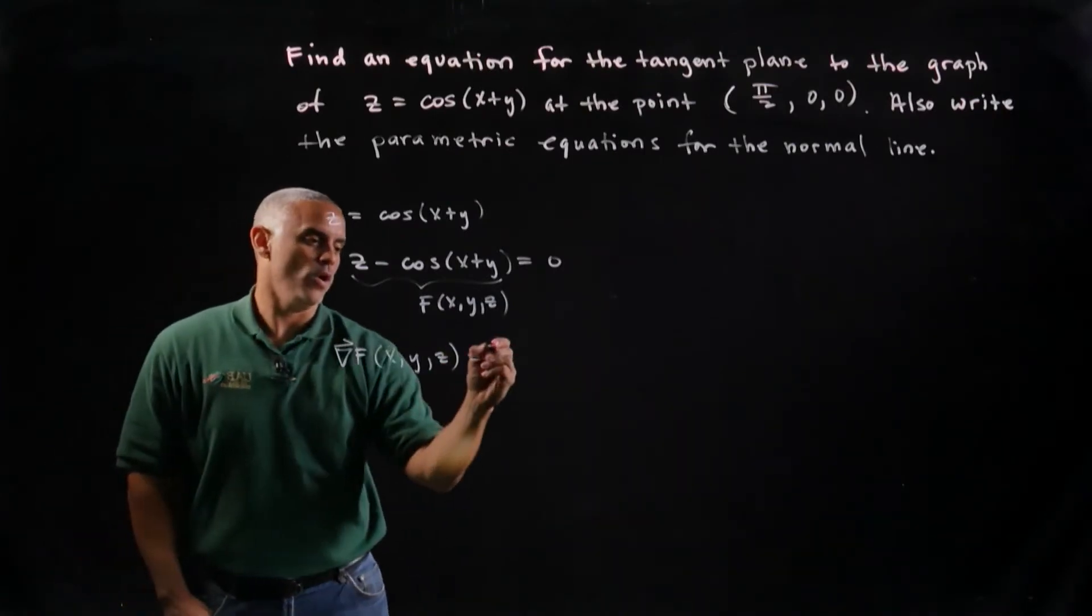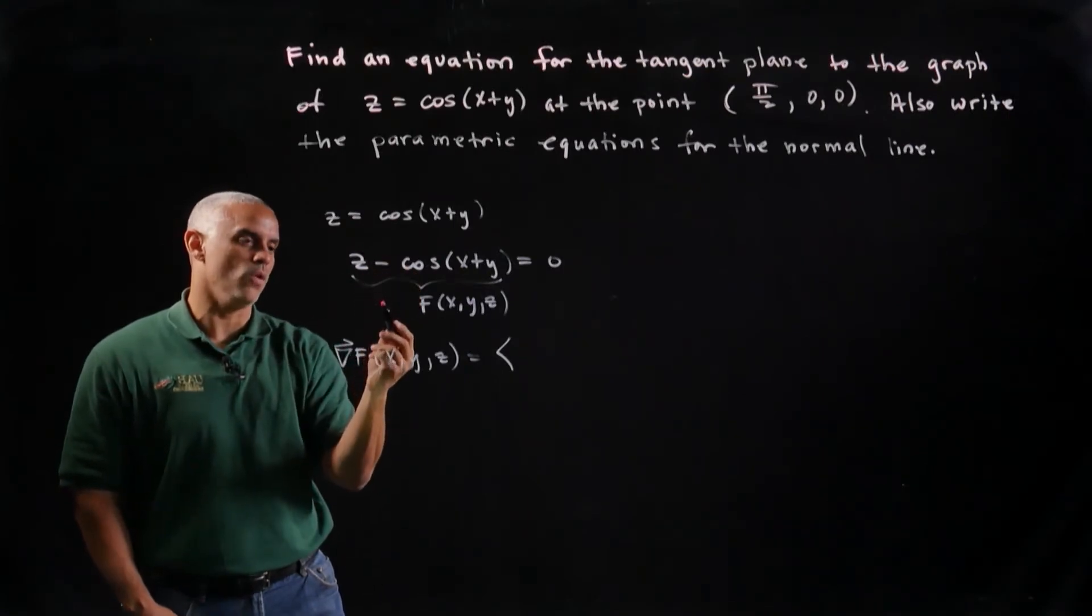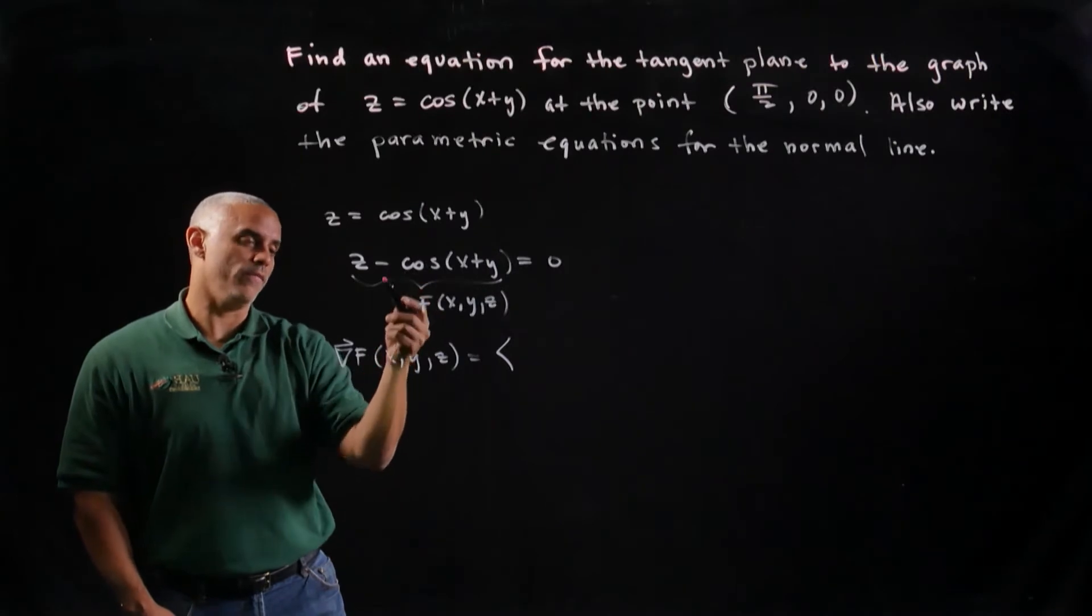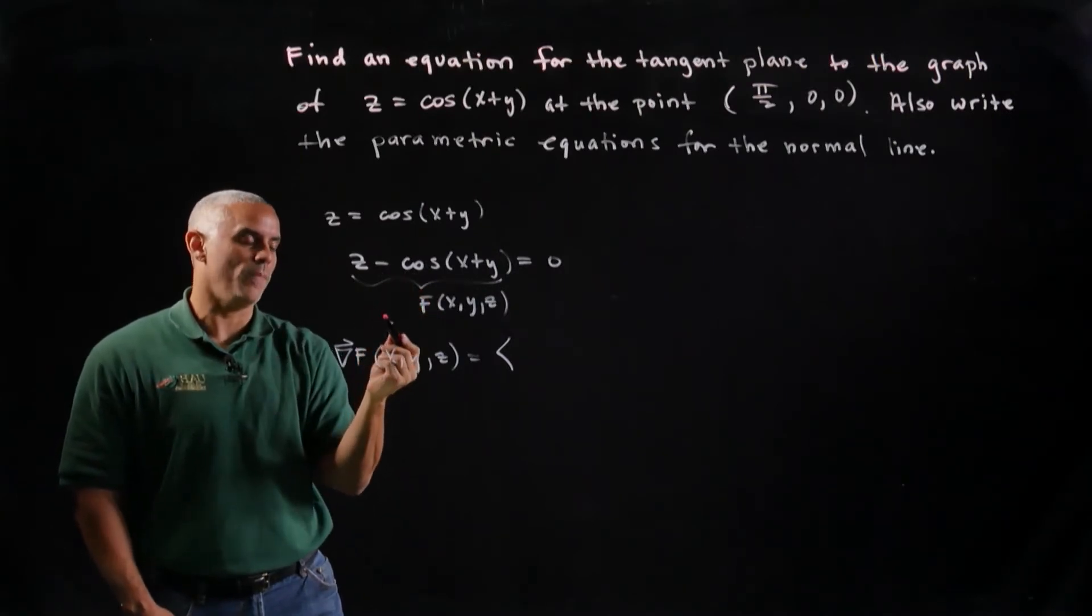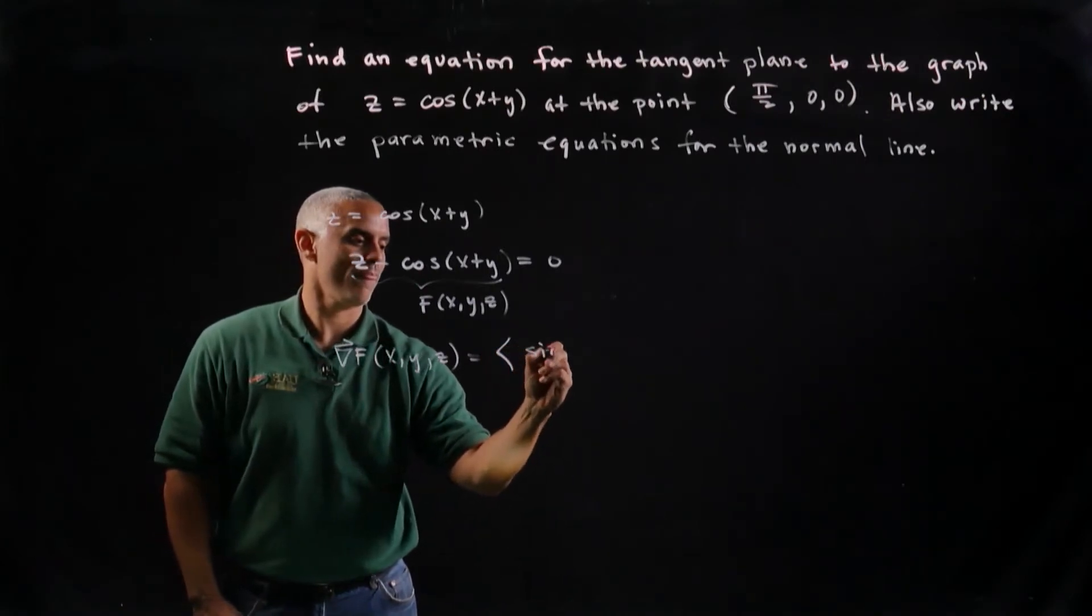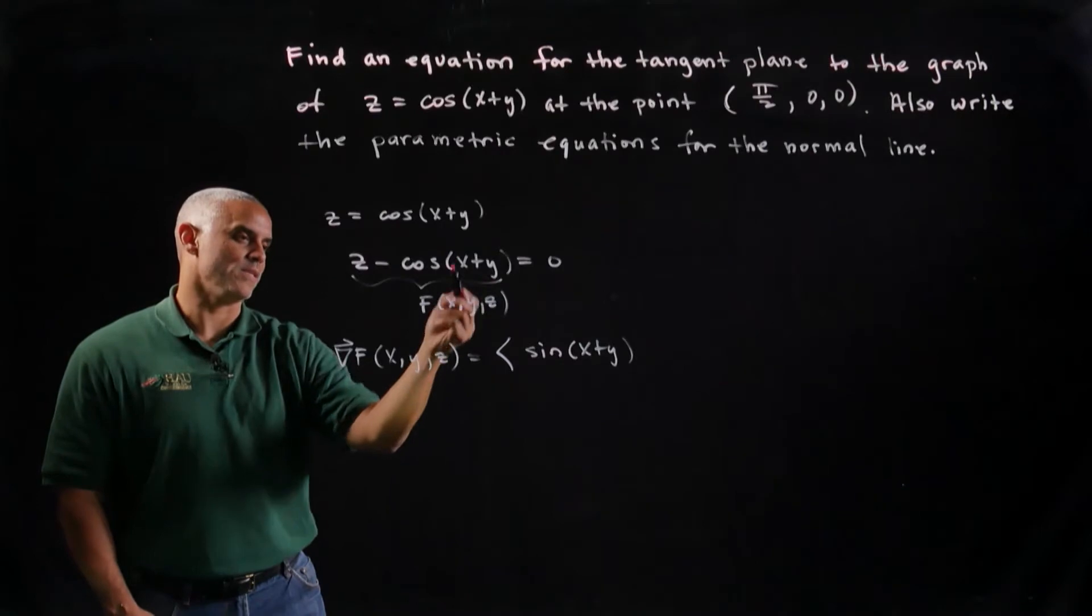And if I find the partial with respect to x, let's see, the partial of the z with respect to x is going to be 0, and the derivative of the cosine is going to give me the negative of the sine, and with that negative it will turn it positive. So I'll get the sine of x plus y times the partial of the argument with respect to x is just 1.